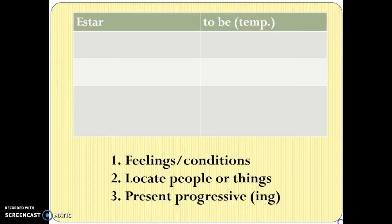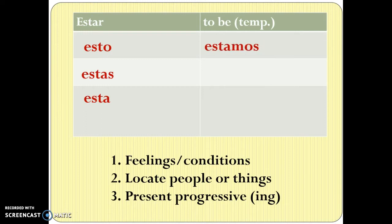So if you've conjugated this for a regular AR verb, you should have written: esto, estas, esta, estamos, estaís, and están. Again, that was if it was a regular AR verb.